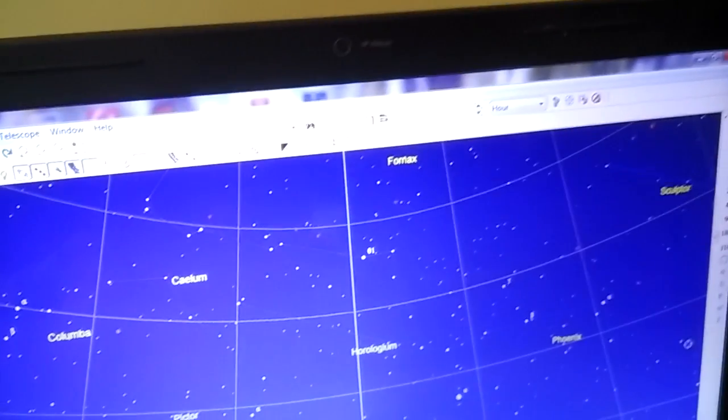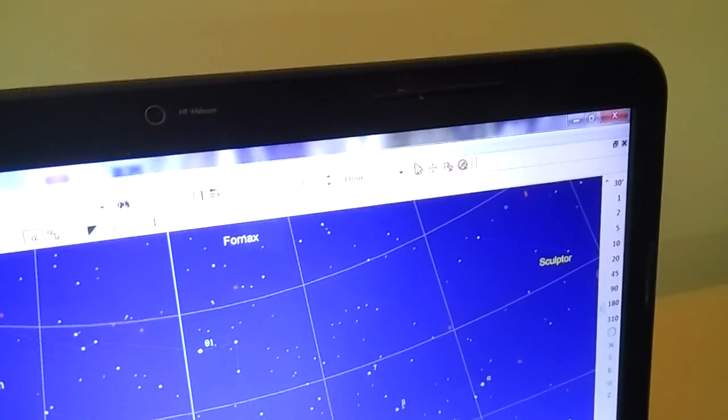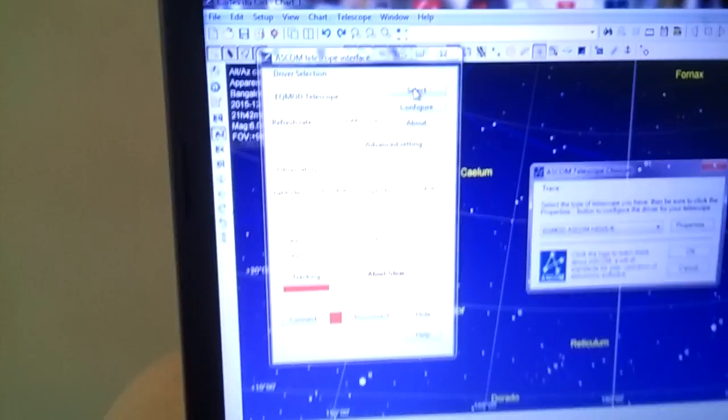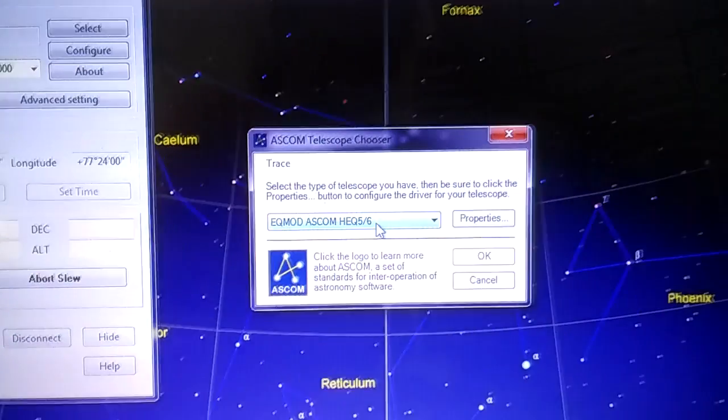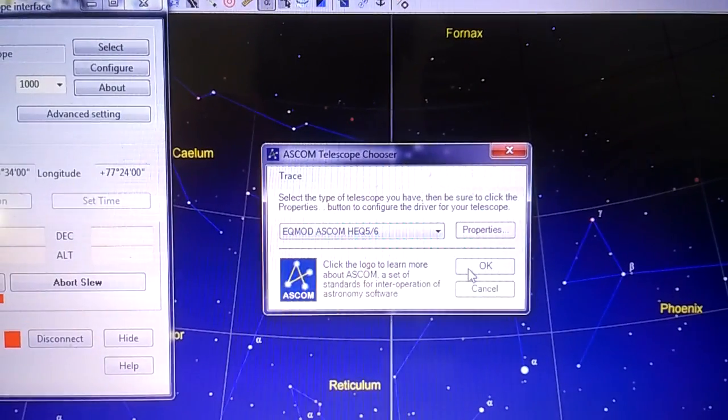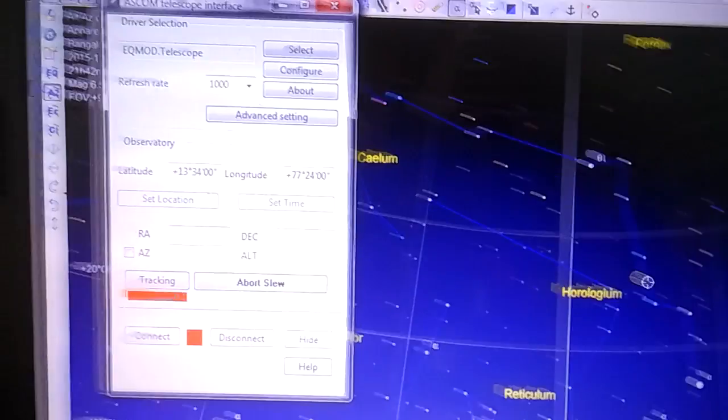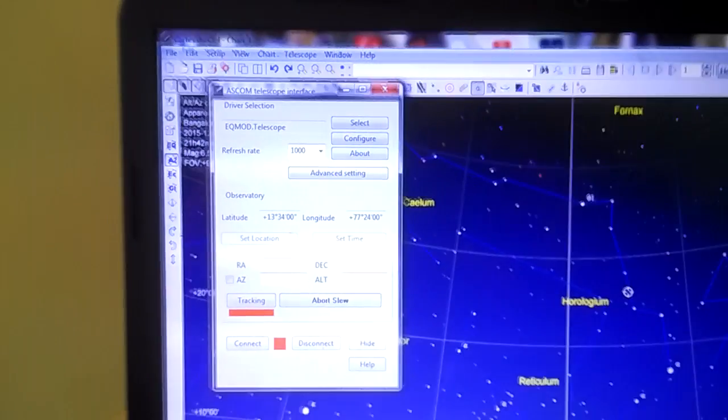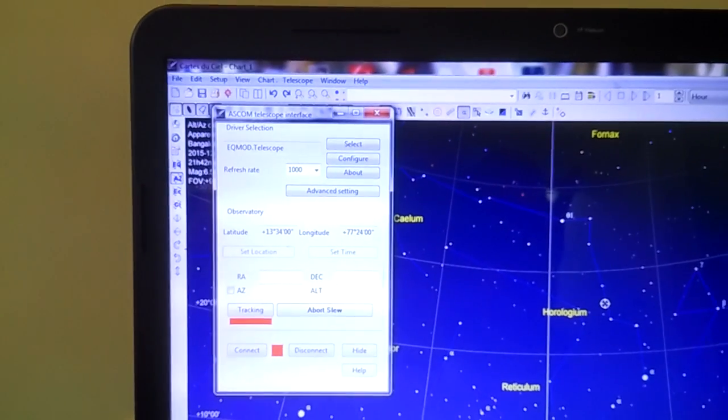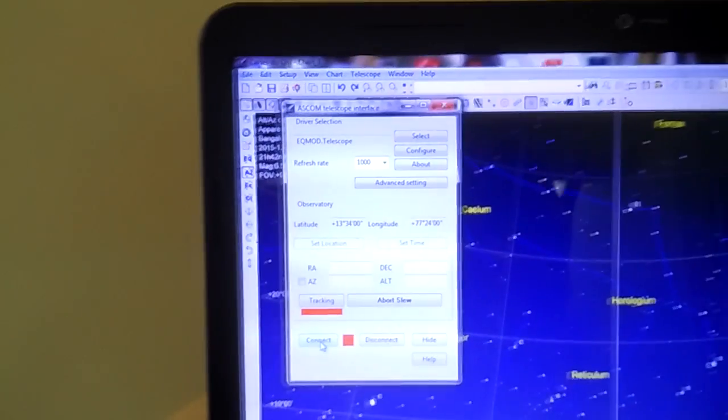We shall now establish a connection with the mount. I shall select the mount as the EQMOD ASCOM HEQ5-6 and press OK. And then I shall press connect.